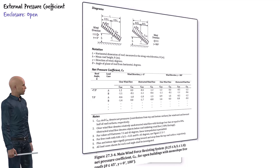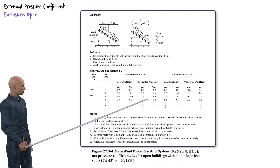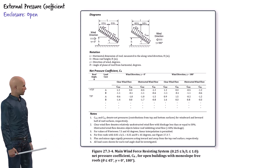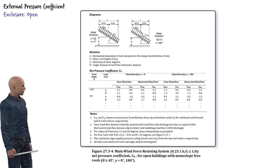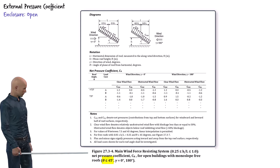Within this section we use figure 27.3-4, which gives us the external pressure coefficients for wind acting in the plane of the frames — that is wind blowing from south to north or north to south. As indicated in the caption of the figure, the data is valid for open monoslope roofs with a slope less than 45 degrees.